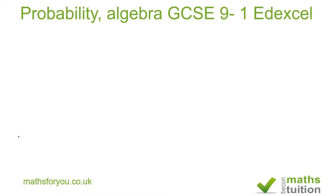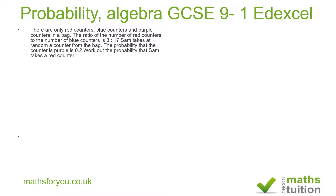Welcome to this exercise on probability based on a past exam question by Edexcel. There are only red counters, blue counters and purple counters in a bag. The ratio of red counters to blue counters is 3 to 17. Someone takes at random a counter from the bag. The probability that the counter is purple is 0.2. Work out the probability that someone takes a red counter.